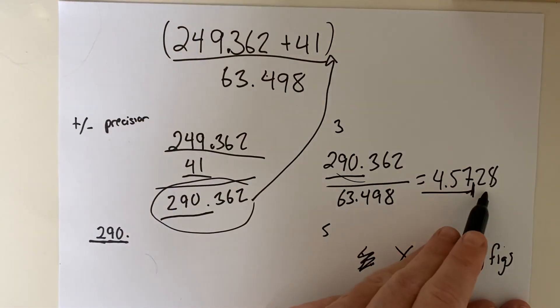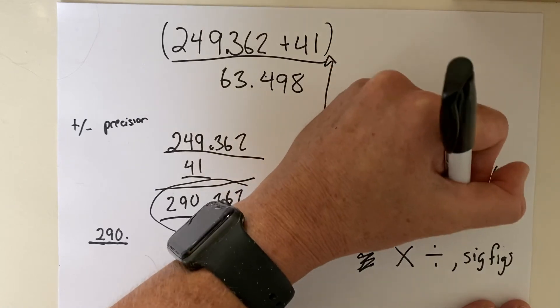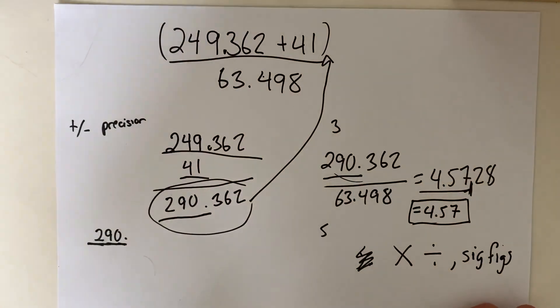We look at that number and ask if the number next to it is five or greater. It's not, so our answer is 4.58, or excuse me, 4.57, period. Or you could put 4.57E0 if you want to represent it in scientific notation. And that's it.